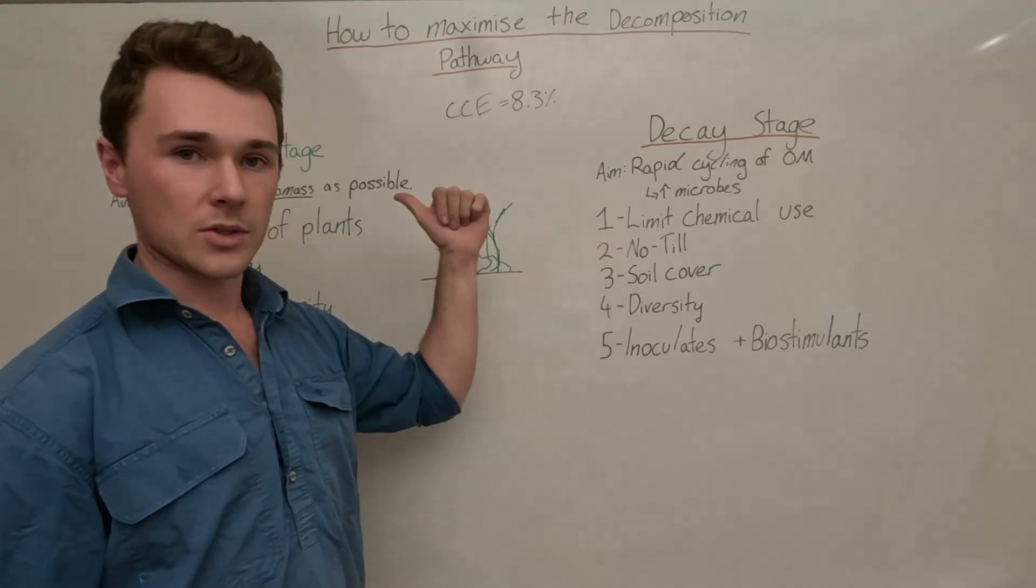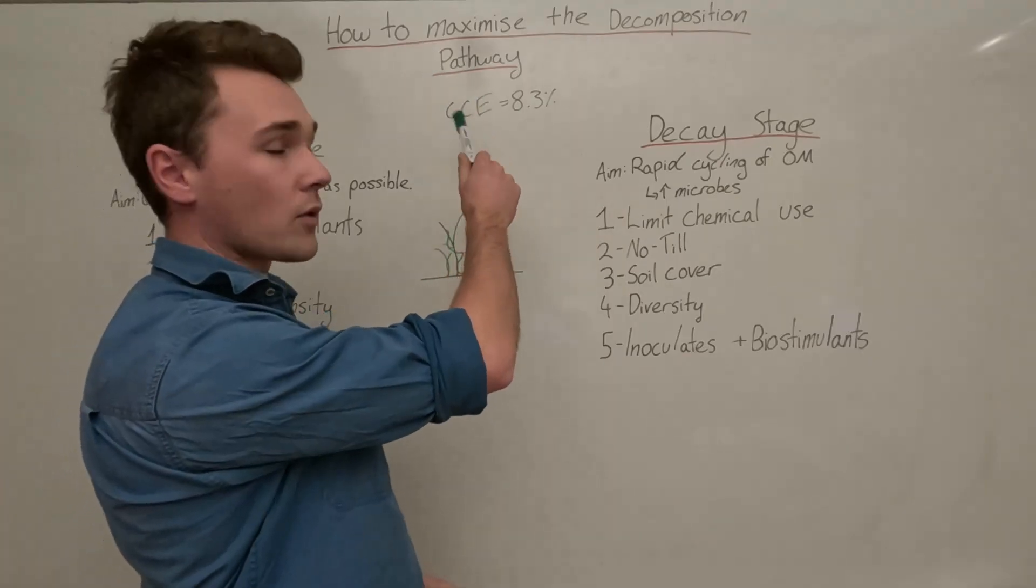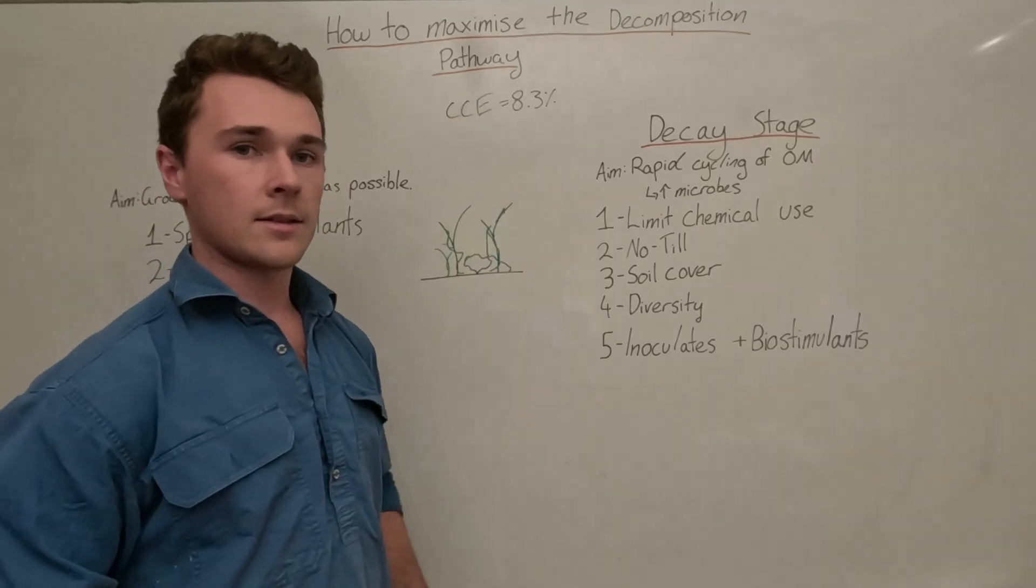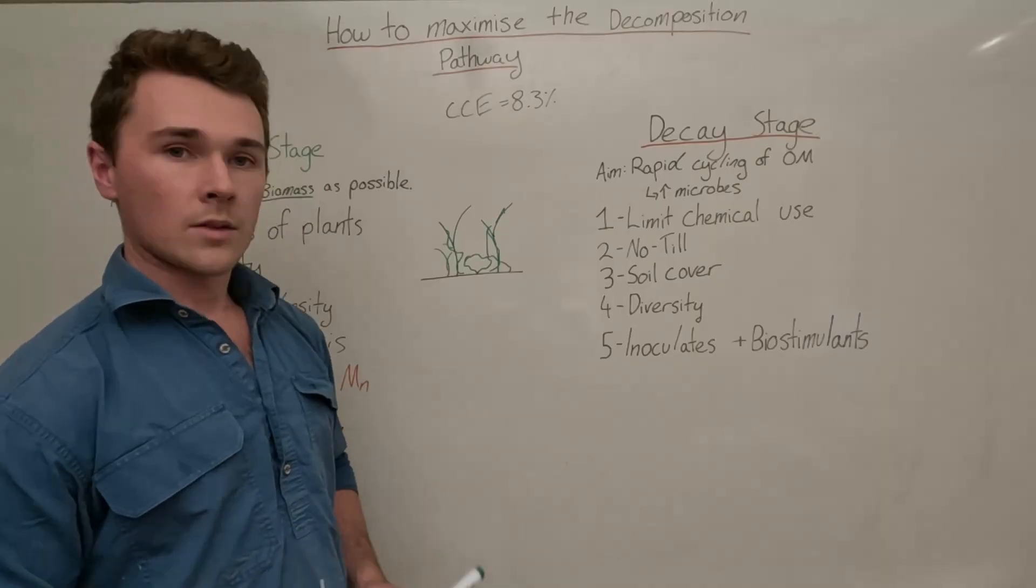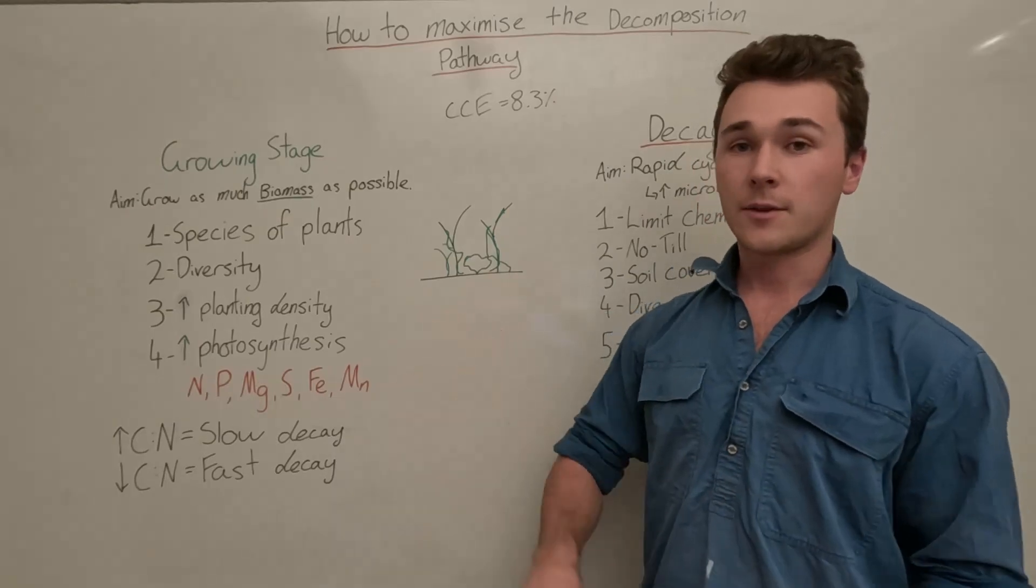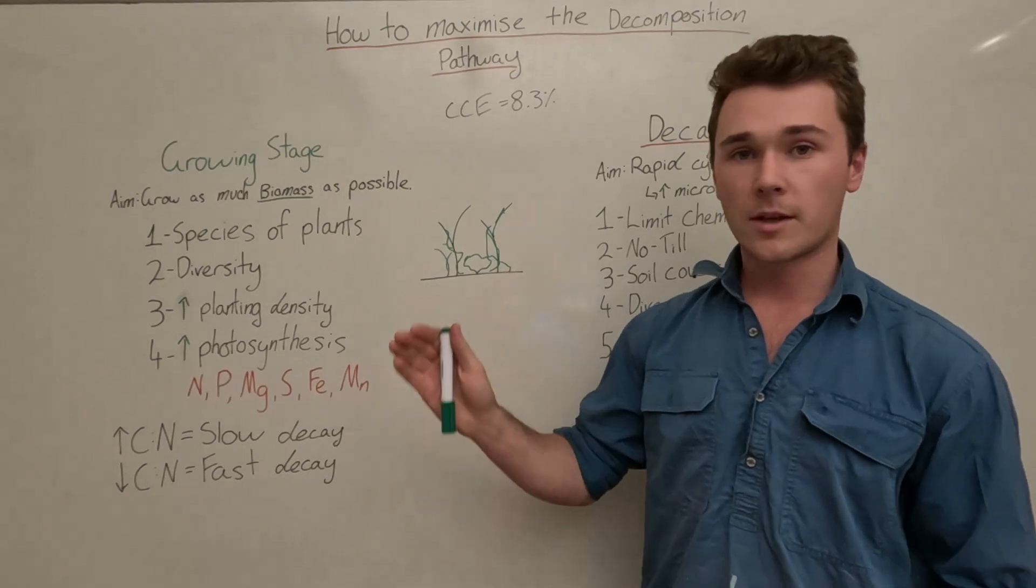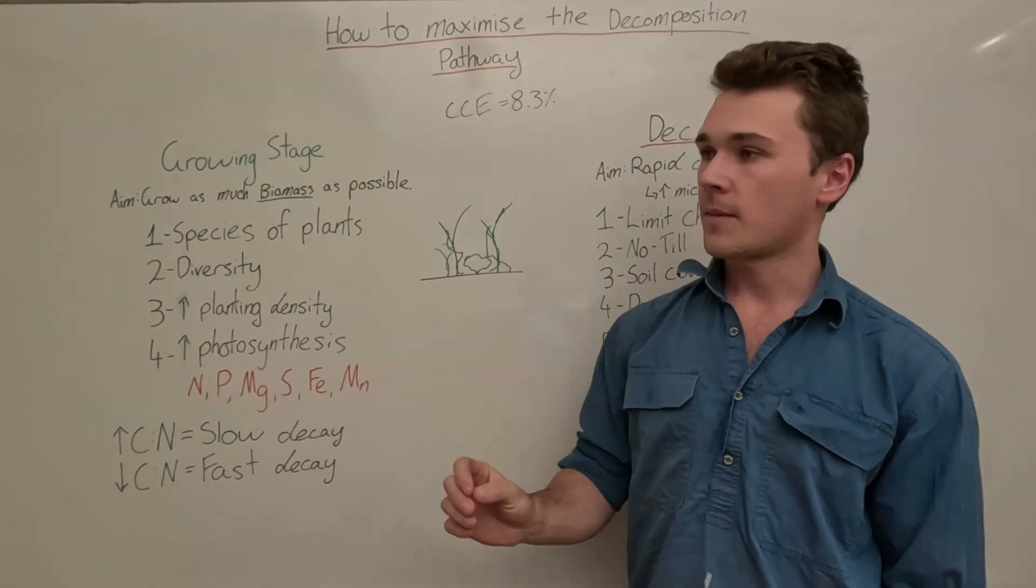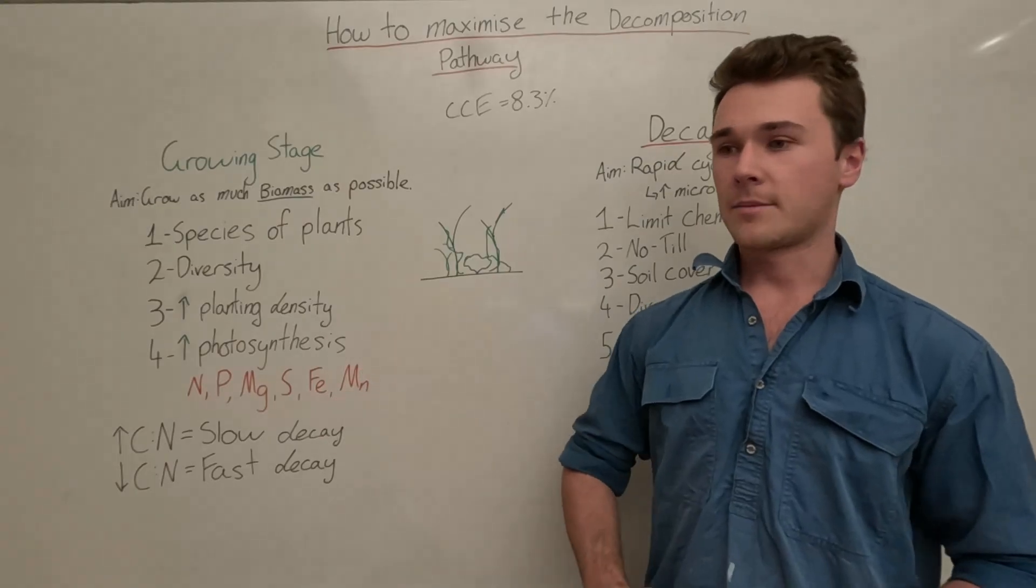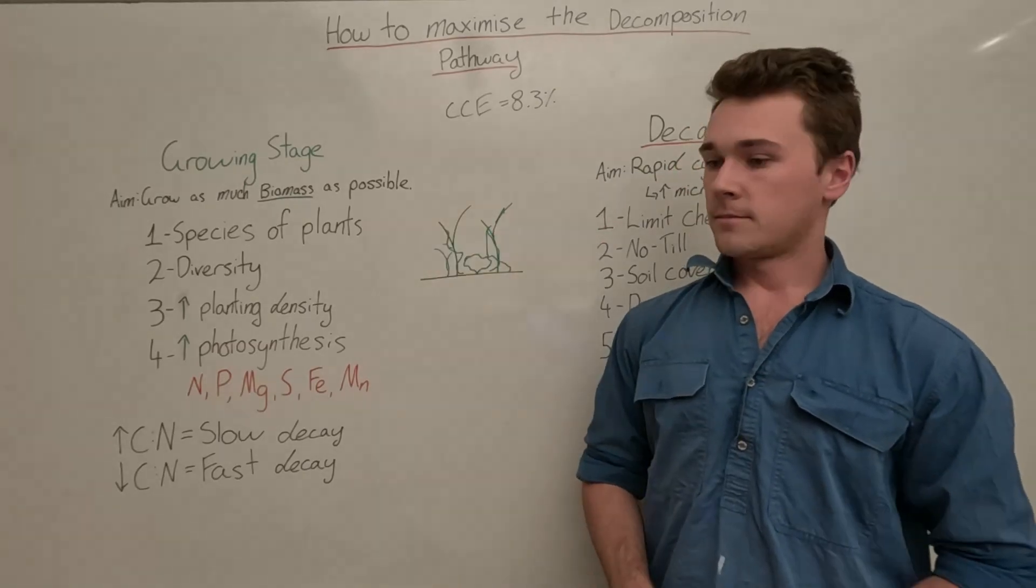That way we're going to increase our total amount of microbes as well as the activity of those microbes to cycle through the organic matter that we just produced even faster, which means we can increase the rate of conversion, increase the cycling and get a more functioning system. That's it for the decomposition pathway. Next we'll be talking about the liquid carbon pathway which is so much more efficient. If you like this video make sure to subscribe and go check out the course on our website. There's a whole bunch of more material and additional resources that you can access all for free. There's no email opt-in, it's just free information. Thanks for watching.